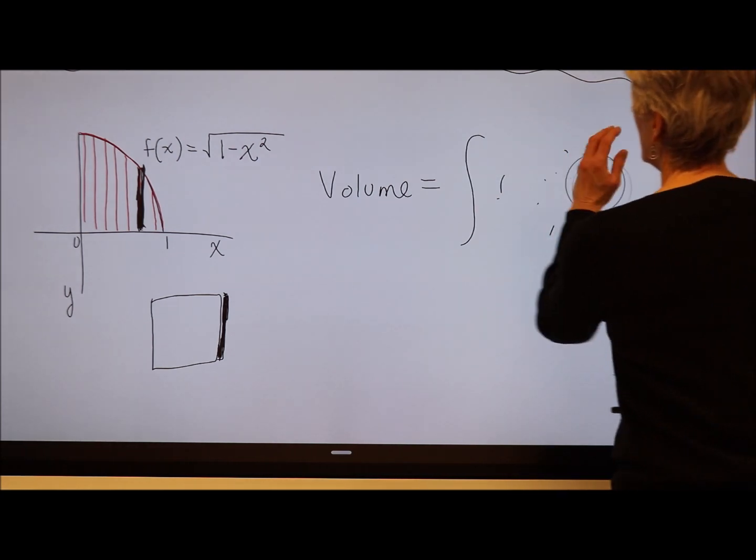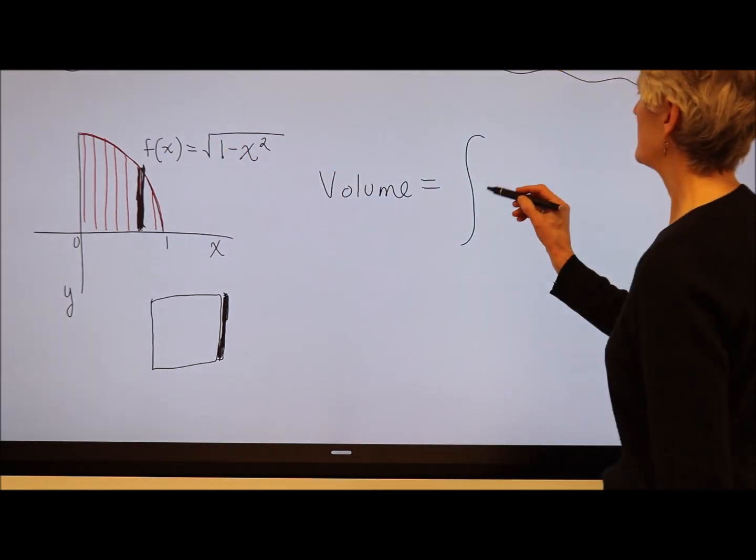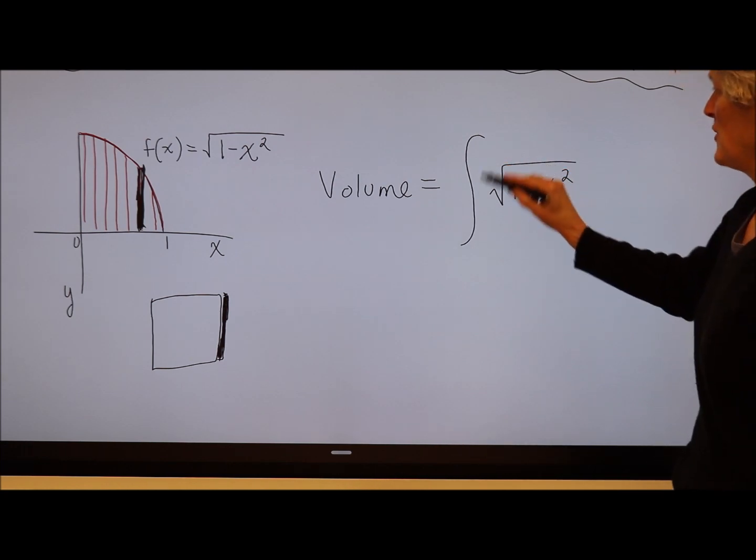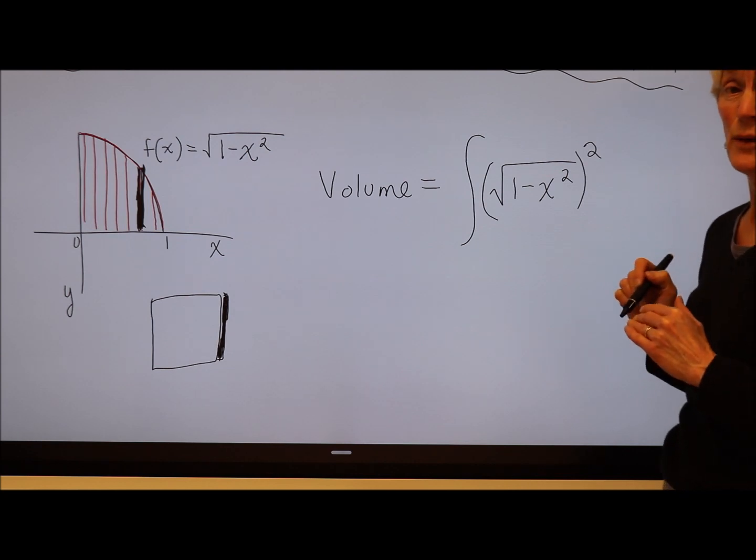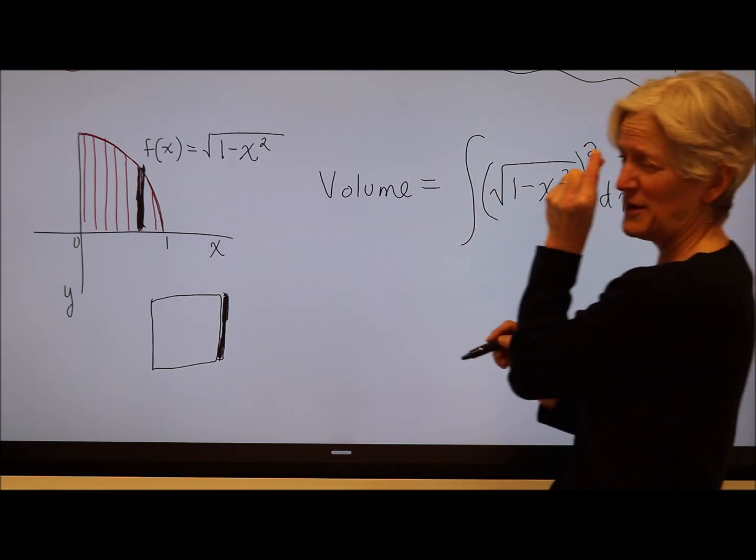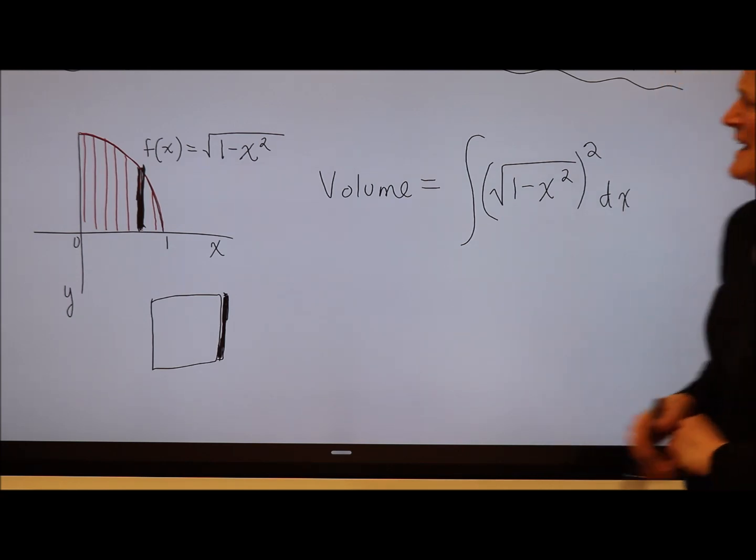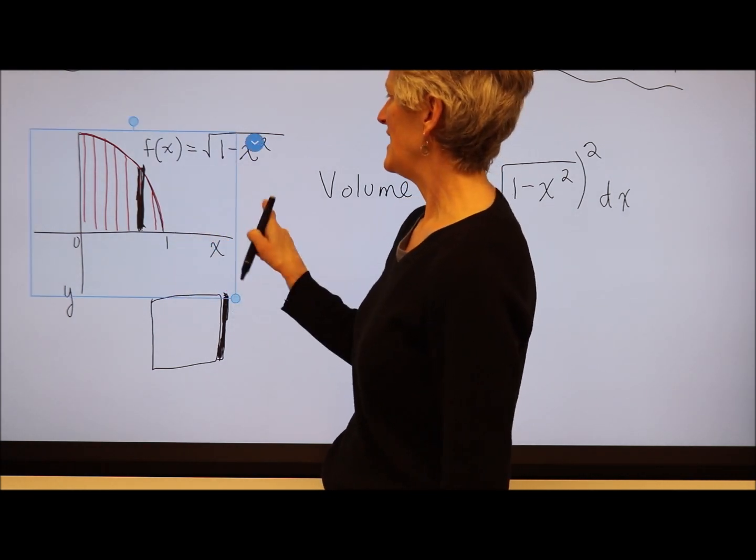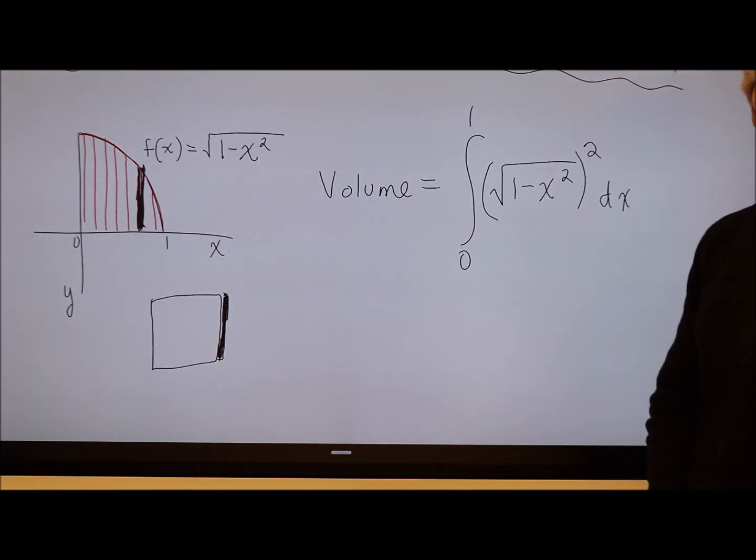If you recall, we are using as the base of our loaf of bread, if you will, this function, the square root of 1 minus x squared. So if that's the base of my square and the height of the square is the same, so I'm just going to square it. And then the little infinitely thin little piece of slice I can think of as the change of x. And I'm going from 0 to 1 because that's where that intersects the x-axis.